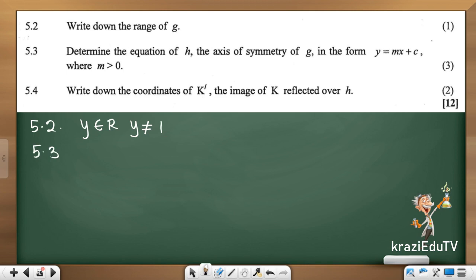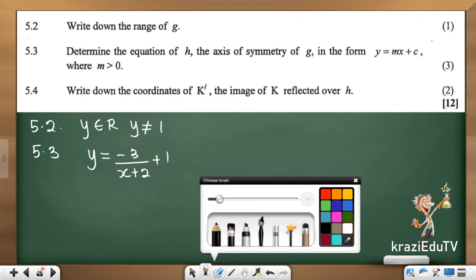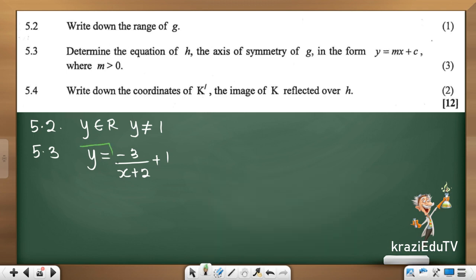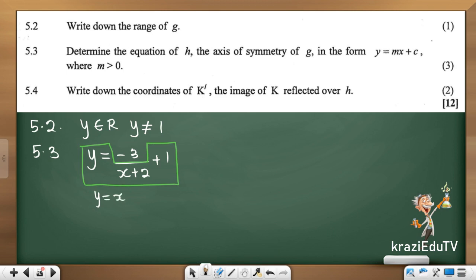5.3. Determine the equation of h, the axis of symmetry. We need our equation. Some of you are going to learn a few things here. This is plus 1. There are two axis of symmetry. And it's a straight line. But the examiner says m, which is our gradient, should be equal to 0. We're done. Just forget about the negative 3. So what do we have? y equals to x plus 2 plus 1. And y equals to x plus 3. We're done. This is the positive gradient.